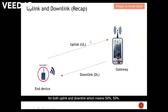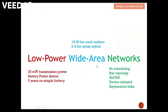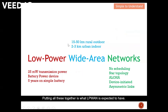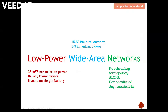An asymmetric link means they don't allocate equal time — 50/50 — for both uplink and downlink. Putting all these together is what LPWAN is expected to have. If any one of these components is missing, you can't classify it as LPWAN.